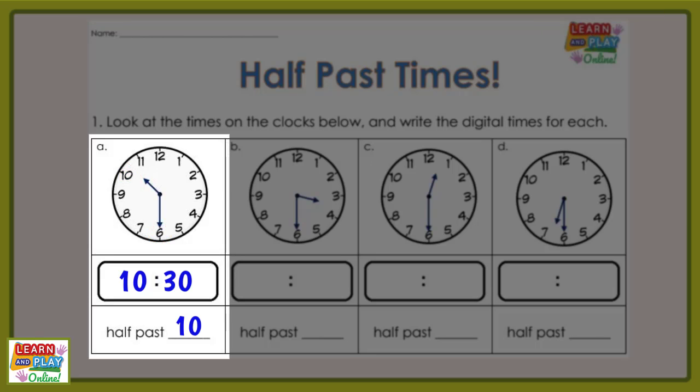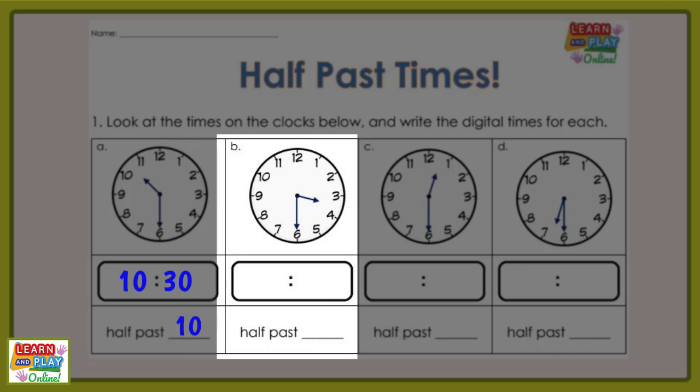Let's move on to question B. The minute hand is pointing to the 6, which means 30 minutes has passed the hour. The hour hand has passed the 3. So the time is 3:30 or half past 3.